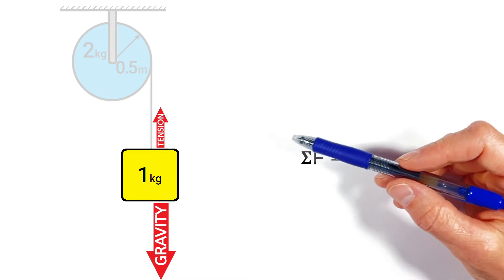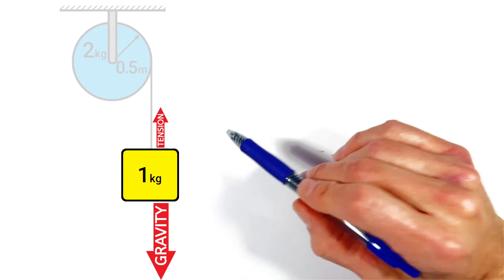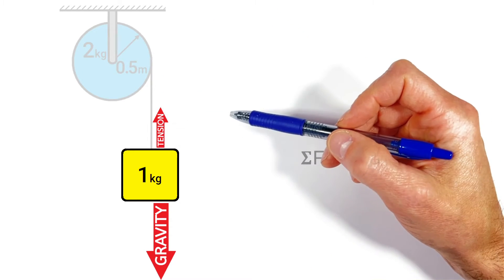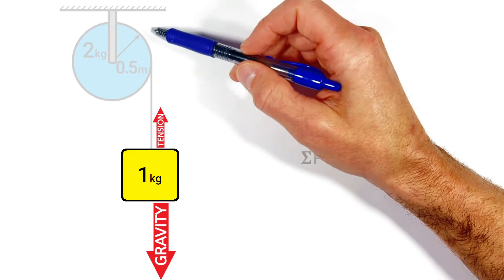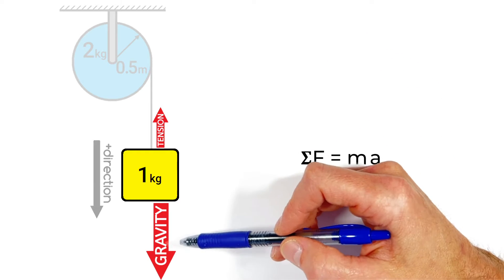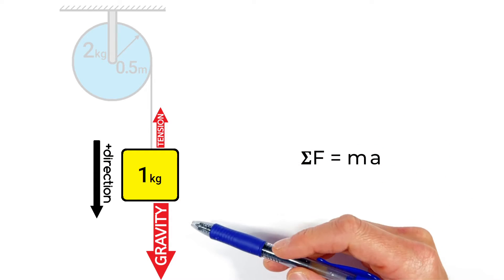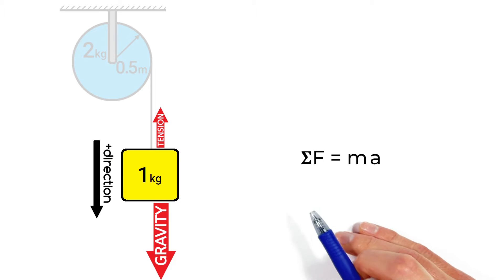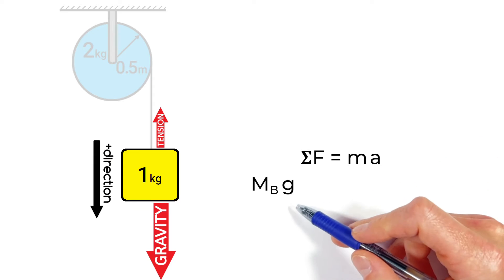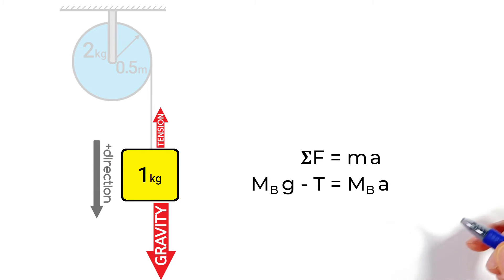The key here is establishing a positive direction. Rather than saying up is positive, we say that any motion corresponding to the clockwise rotation of this pulley is going to be positive. So if the pulley rotates clockwise, that correlates to the downward motion of the block — meaning downward for the block is the positive direction. So our net force equation is MBG minus the tension in the string equals MB times A.